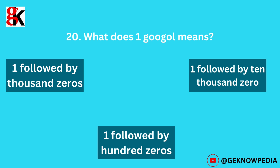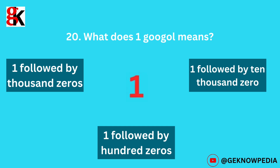Twentieth question. What does one googol mean? Options: one followed by a thousand zeros, one followed by ten thousand zeros, one followed by a hundred zeros. The correct answer is 1 followed by 100 zeros.